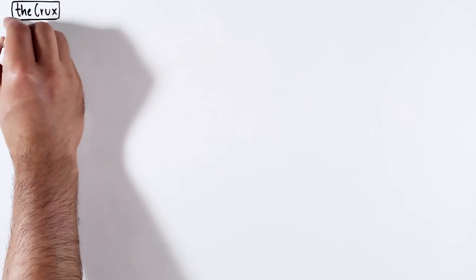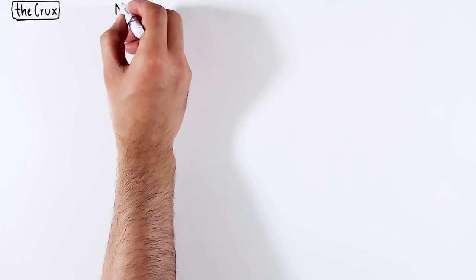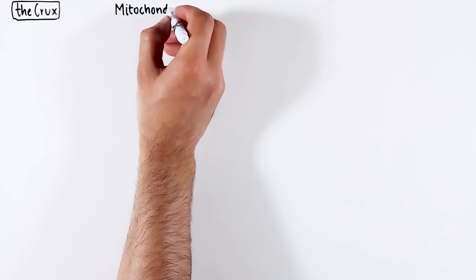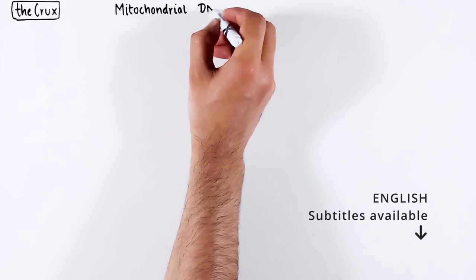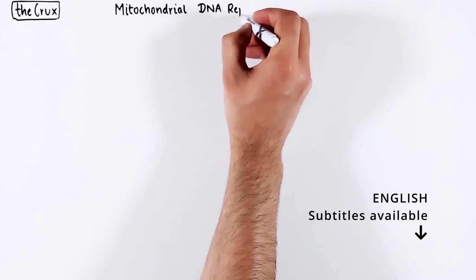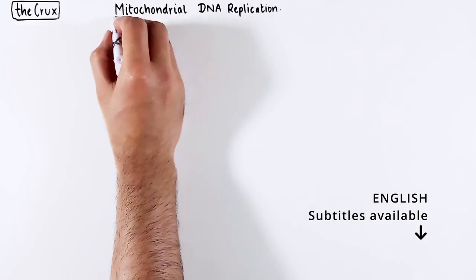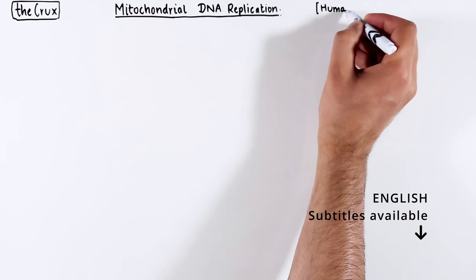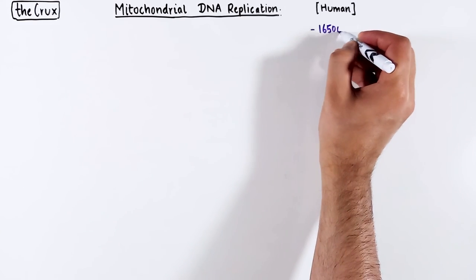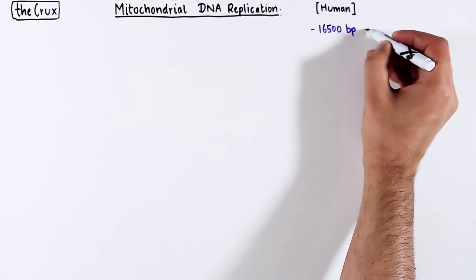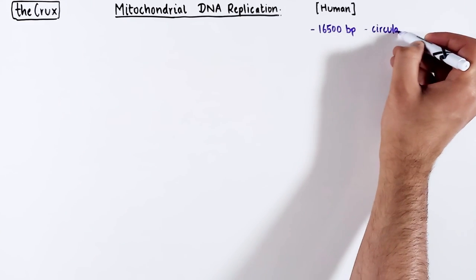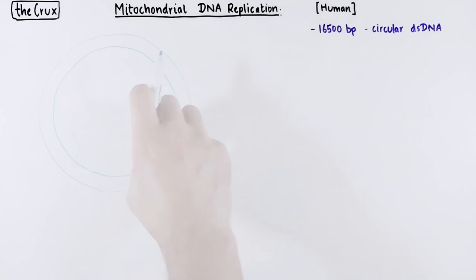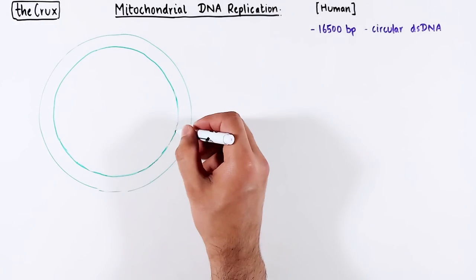You've heard of this weird bacteria-like organelle called mitochondria? It makes over 90% of all the energy we use. It has its own genome. In humans, it is around 16.5 kilobases, which happens to be circular and double-stranded just like bacteria.